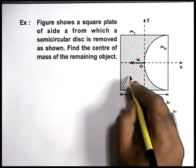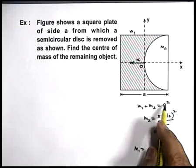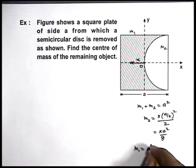And the remaining part of the plate will be having a mass m1 which can be written as a² minus πa² by 8.